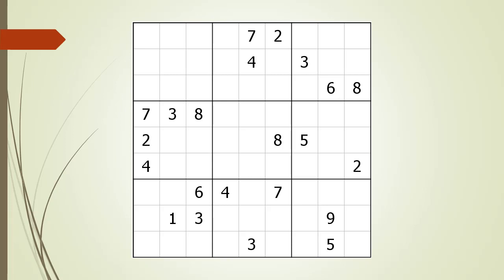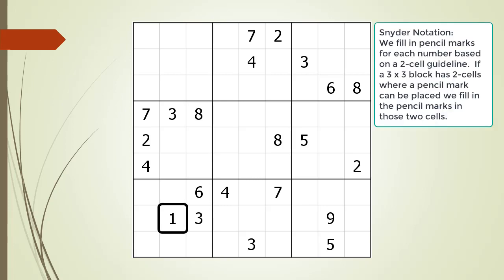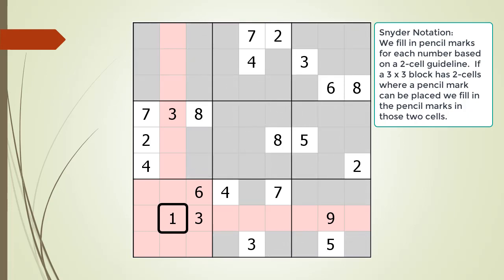Snyder notation will be explained by an example of its use. We begin by showing all the cells having a given or a value of 1 outlined in black. In this example, there is only one cell, 8,2, which has a 1 as a given. For cell 8,2, we highlight all the cells in the three shared houses in light red, meaning any cell with a light red background cannot have a pencil mark for the number 1. Based on the Snyder notation guidelines, we only put pencil marks in 3x3 blocks having only two cells highlighted in gray.